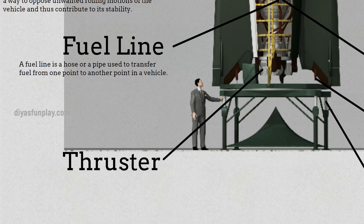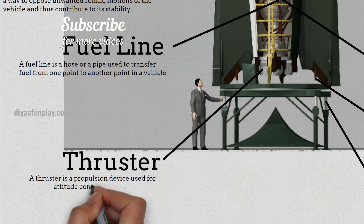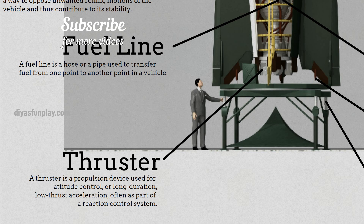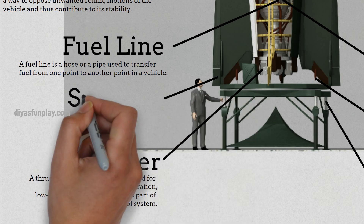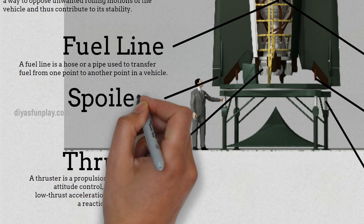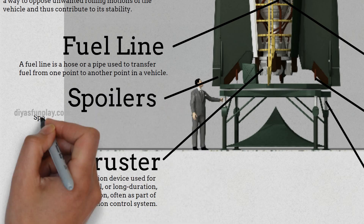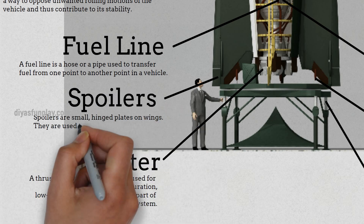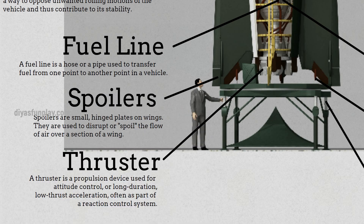Thruster. A thruster is a propulsion device used for attitude control, or long-duration, low-thrust acceleration, often as part of a reaction control system. Spoilers. Spoilers are small, hinged plates on wings. They are used to disrupt or spoil the flow over a section of a wing.